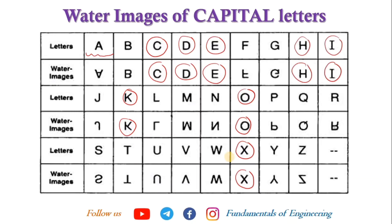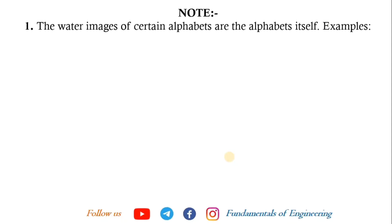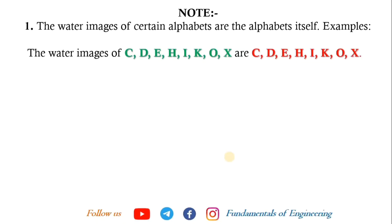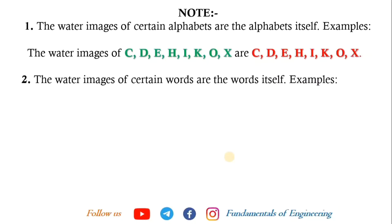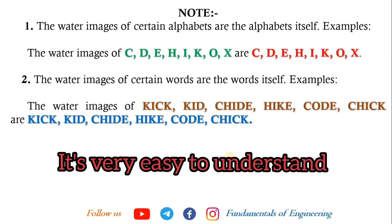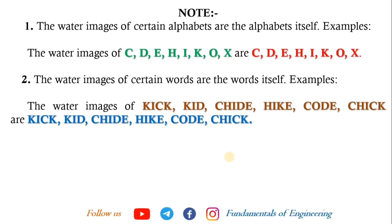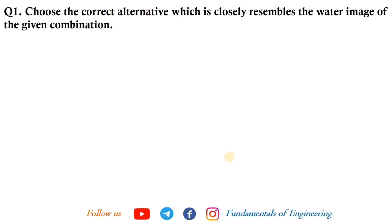If a letter belongs to the group C, D, E, H, I, K, O, X, then its water image reflection appears the same. Certain words formed entirely from these letters will also appear the same in their water image reflection — for example: KICK, KID, CHILD, HEIGHT, CODE, CHICK. These words, when reflected in water, look the same as the original.